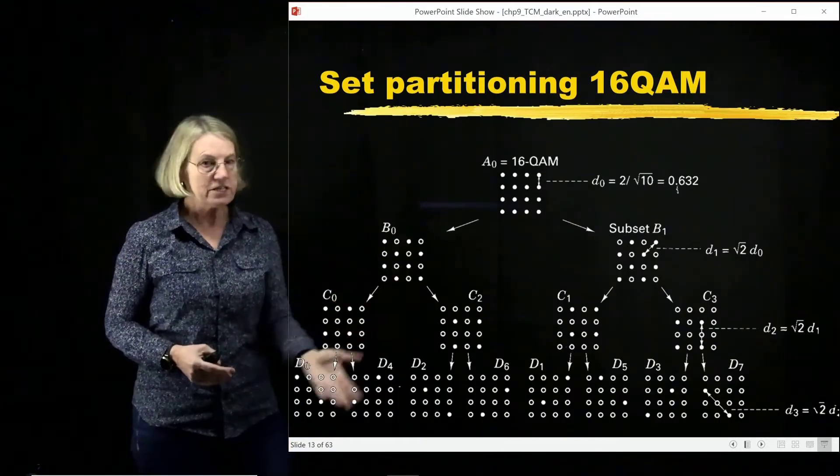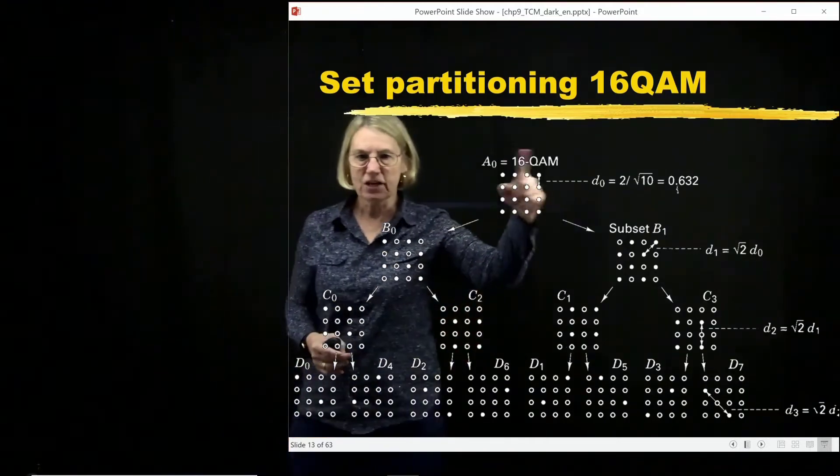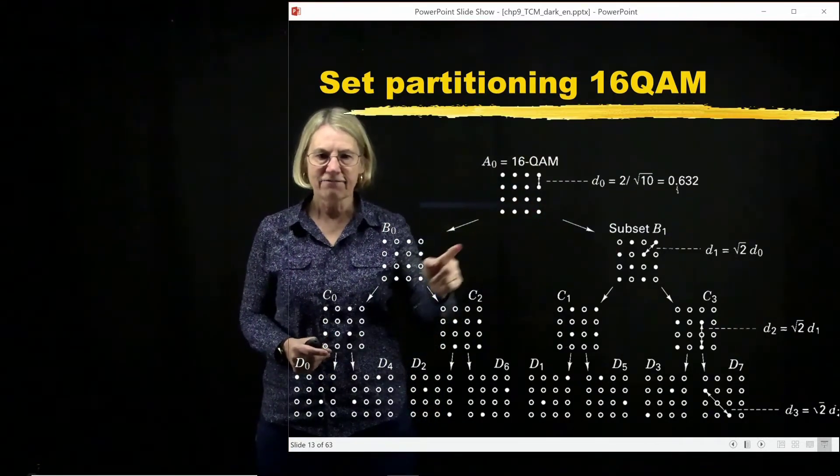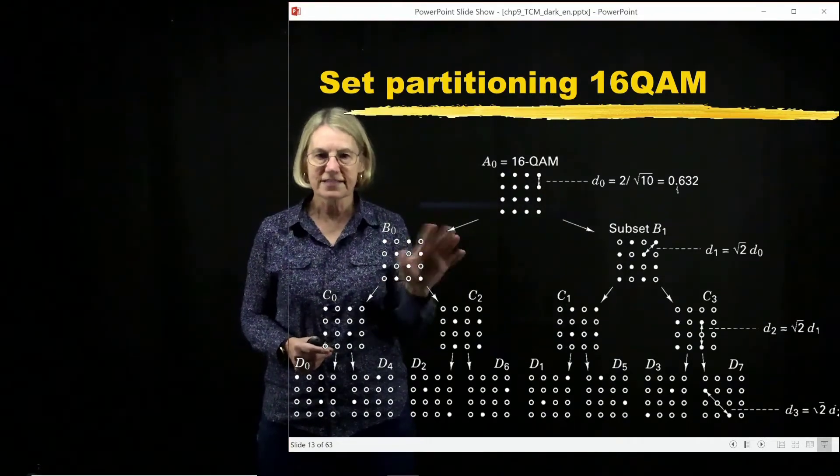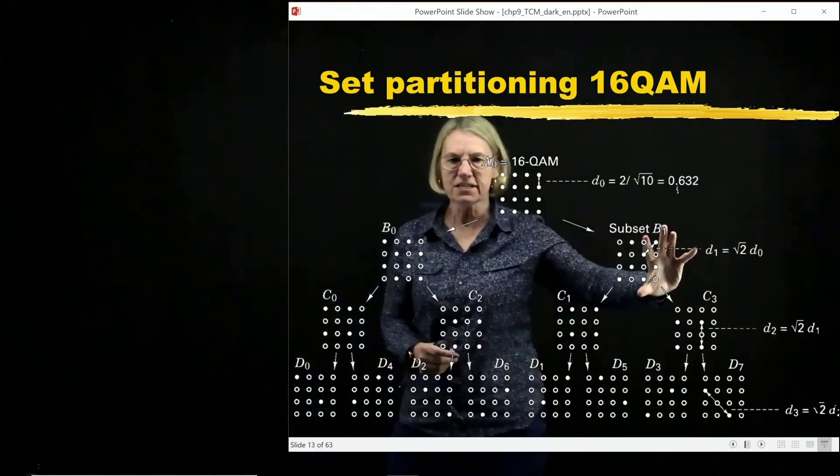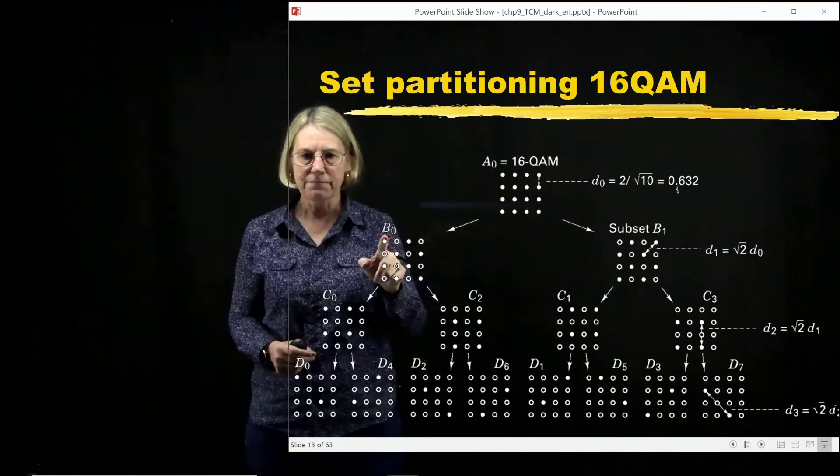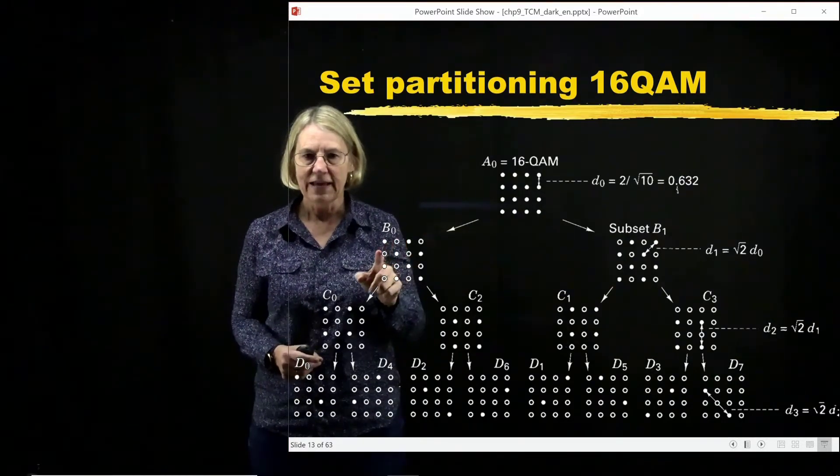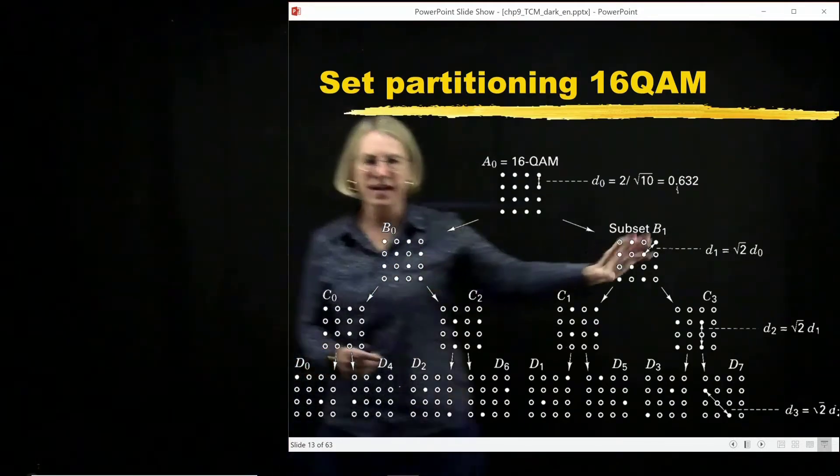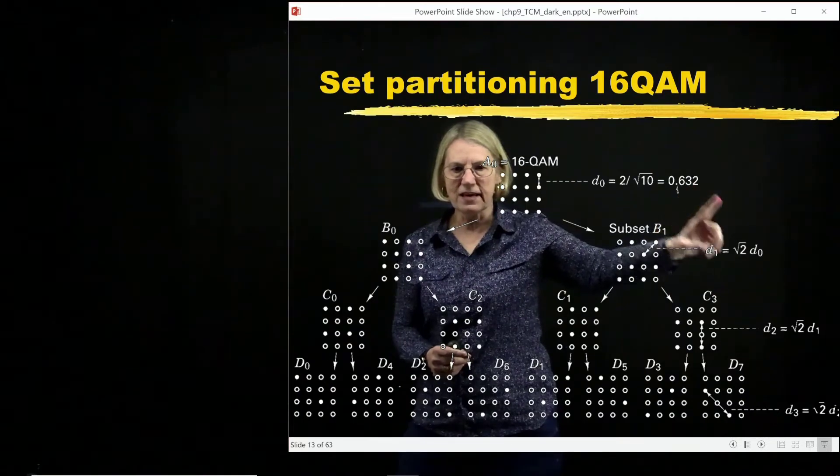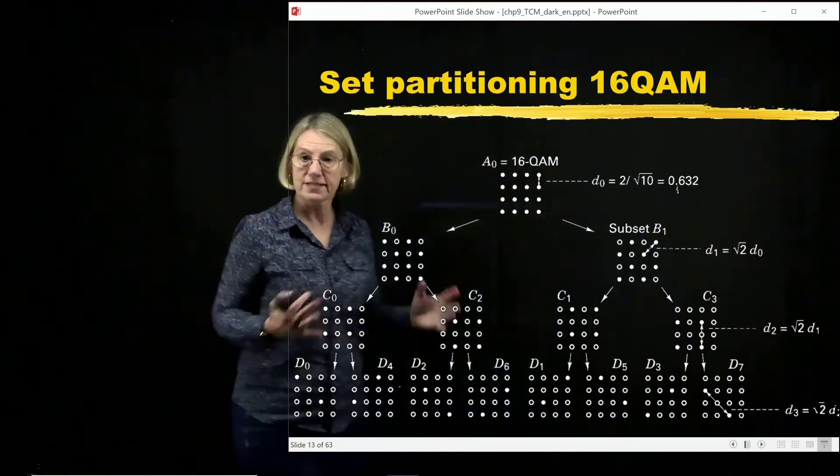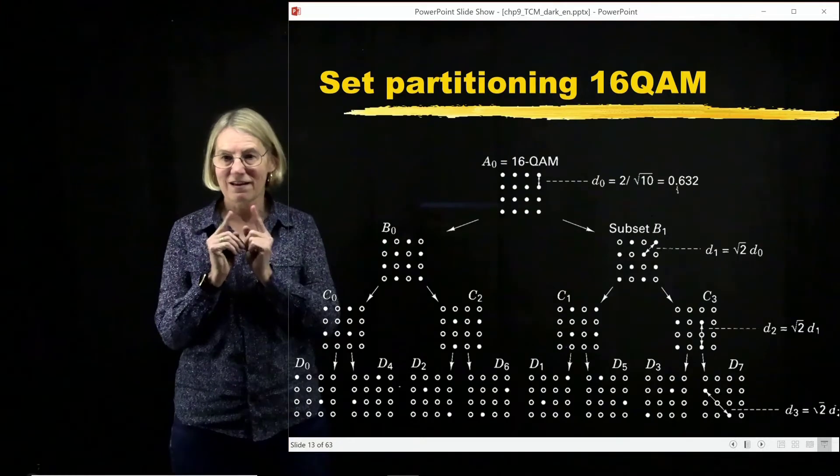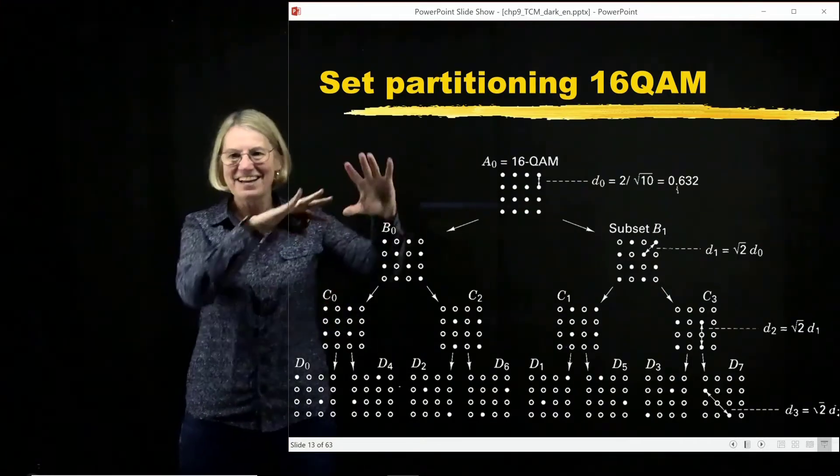This set partitioning works really well even with 16 QAM. Here we have the 16 points on a regular lattice. If I take every other point and staggered, I will get 2 collections of 8. I took the corner here, kept it here on this group, and then I didn't take the next nearest neighbor, I took the next one. We can see that the minimum distance is increasing, and it's also very regular, so it makes sense as a progression.